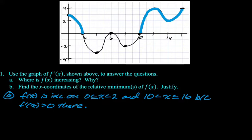I do think you can switch the order and say that f prime is greater than 0 on 0 inclusive to 2, and then 10 to 16 inclusive. Therefore, f is increasing on and then close all of them.